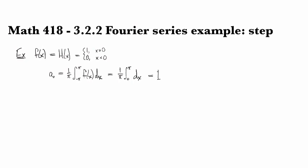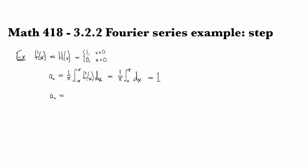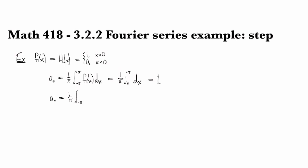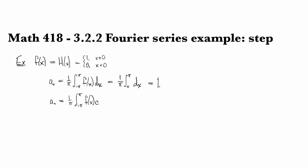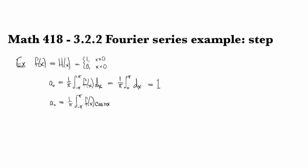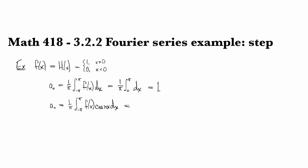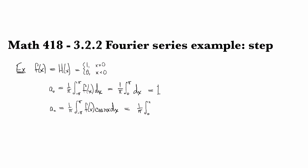If we look at aₙ for n larger than 0, this is going to be 1 over pi integral from minus pi to pi f(x) cosine(nx) dx. This is going to have the effect of just truncating the domain to be from 0 to pi.